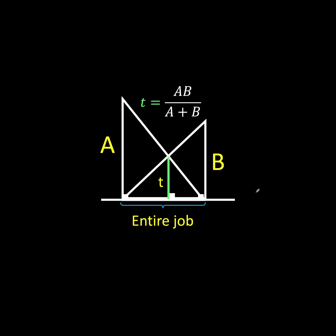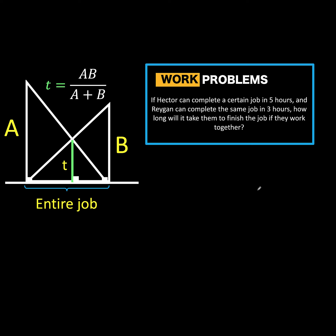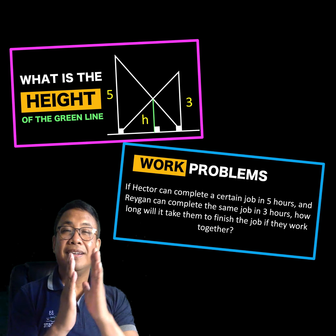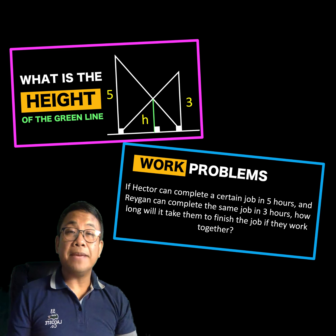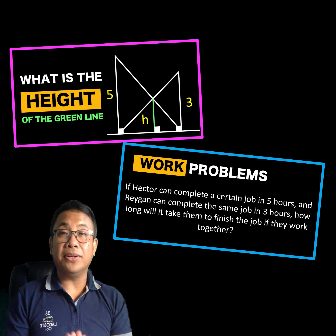Applying this to solve the work problem: Hector can finish the job in 5 hours working alone, and Reagan can finish the job in 3 hours working alone. Working together, they can finish the job in 15 over 8, or 1 hour and 52.5 minutes. So two different types of problems, but they are solved using the same solution.